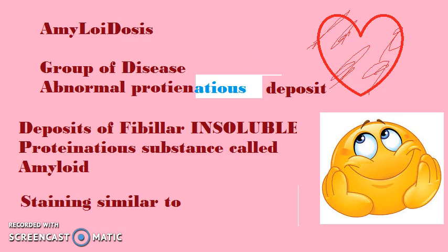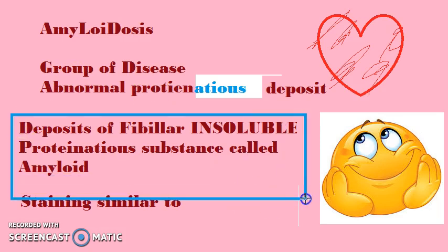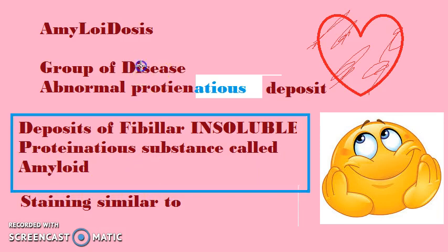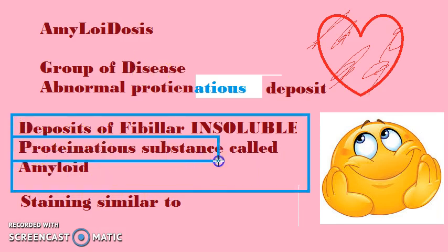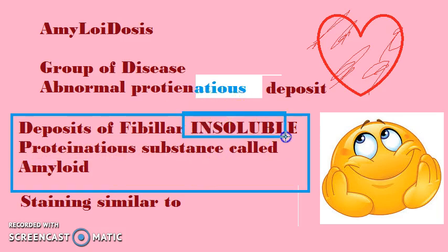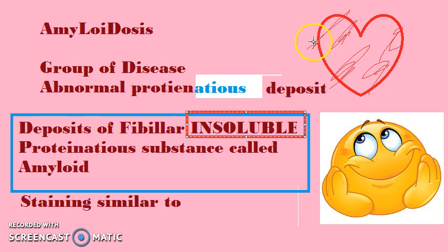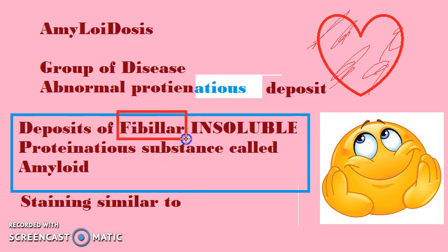For the definition: amyloidosis involves deposits of fibrillar, insoluble proteinaceous substance called amyloid. What is actually deposited is amyloid. It is a proteinaceous substance — importantly, it is insoluble. This is why it keeps depositing and collecting; it never goes away. It is fibrillar because 95% of this component is fibrillar and 5% is non-fibrillar.